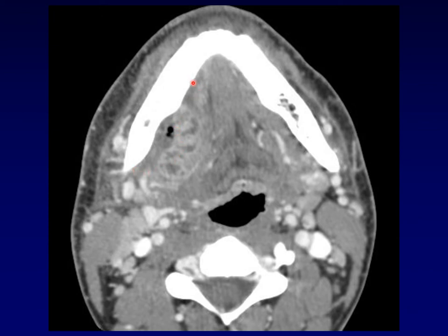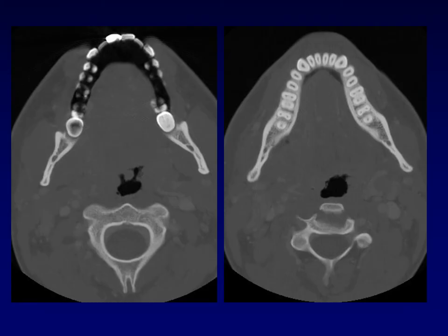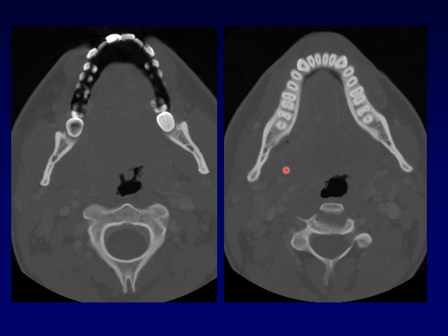Once again, we need to switch to our bone windows. On the bone windows we can see that there is a large cavity in this third molar wisdom tooth of the mandible, and you can even see a small focus of cortical breakthrough from the apex of this tooth out into the soft tissues. So here the wisdom tooth of the right mandible is the source of infection.